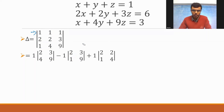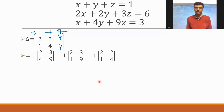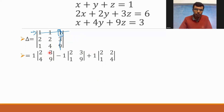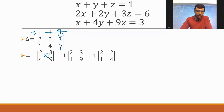Next, the third element is one. Strike off the row and column in which this one is located. What I'm getting is 2, 2, 1, 4. Now, in case you're not familiar with how to expand a 2×2 determinant — it's very simple. It's just two into nine minus four into three. Here also two into nine minus one into three. So it's AD minus BC. Two into four minus one into two.